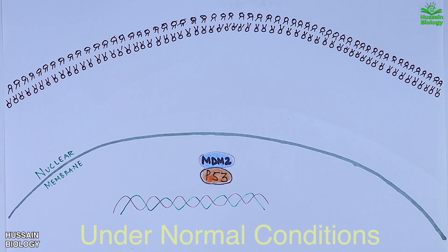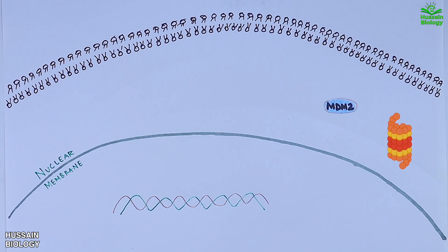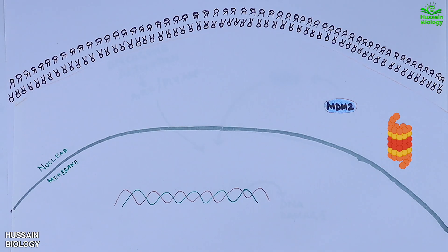It does this by tagging p53 for degradation via ubiquitination as shown in the diagram. Then this ubiquitinated complex moves to cytoplasm where p53 is taken up by the proteasomes and degraded, and MDM2 shuffles back to the nucleus.